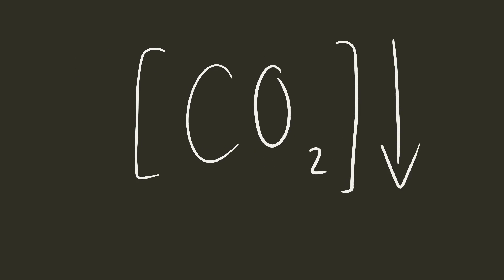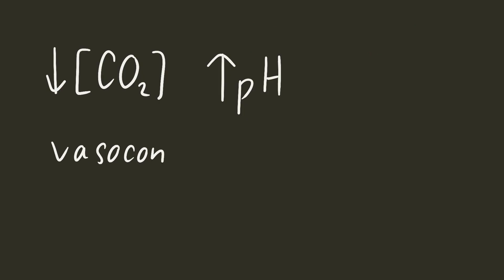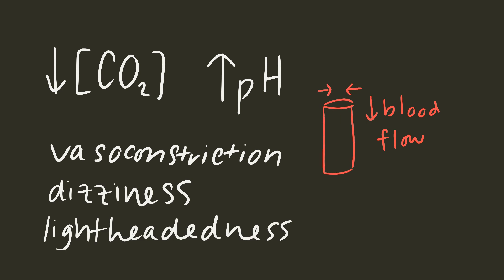Hyperventilation causes low CO2 levels in the blood, also known as hypocapnia, which leads to an undesirable rise in blood pH. To normalize pH levels, our body constricts the blood vessels leading up to our brain. This reduces blood flow to our wrinkly little noggin, which causes the dizziness and lightheadedness often felt when hyperventilating.